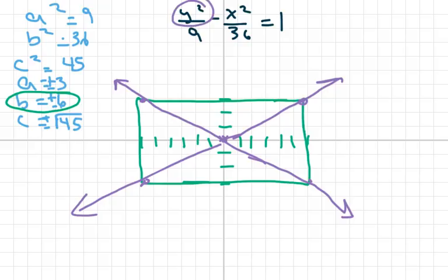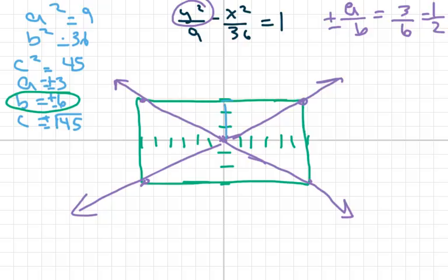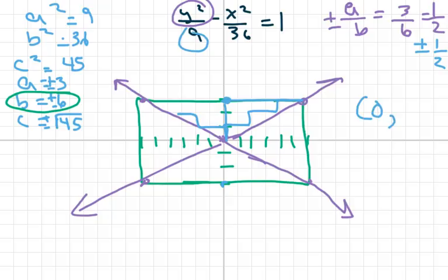The slope of the asymptotes is y over x, which is 3 over 6, equaling one half. I can go up 3 over 6 or equivalently up 1 over 2 repeatedly. The slope is plus or minus one half. The vertices are at (0, 3) and (0, −3).